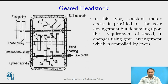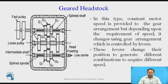In this type, a constant motor speed is provided to the gear arrangement, but depending upon the requirement of speed, it changes using the gear arrangement, which is controlled by levers. These levers change their position to generate different combinations to acquire different speeds. For example, in this figure, G2 gear meshes with G5 and G5 meshes with G8. The belt transmits motion to G2, then G2 to G5, and G5 to G8, and that speed is applied to the live center so the workpiece rotates. Nine different combinations and nine different speeds can be obtained from this geared headstock.